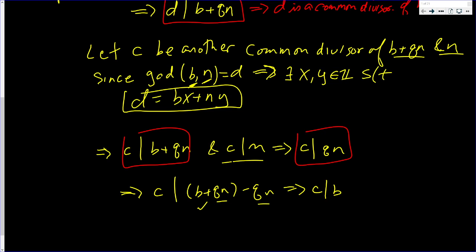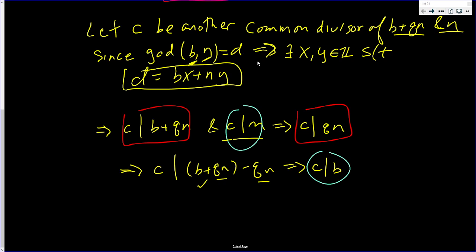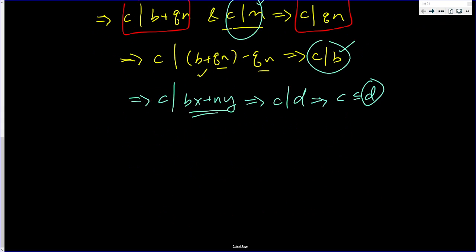So we have that C divides N and C divides B. That implies that C divides any linear combination of B and N, like BX plus NY. But that implies that C divides D. Because that's D. That implies C is less than or equal to D. That is, if I pick any arbitrary common divisor of B plus QN and N, it is smaller than D, which is up to now a common divisor.